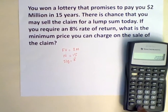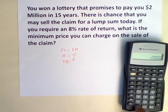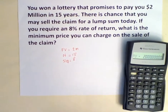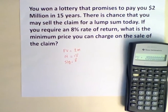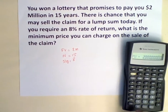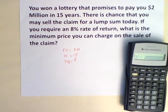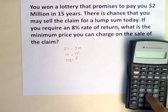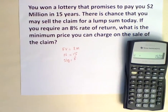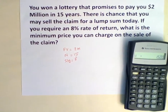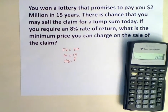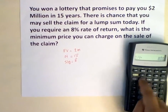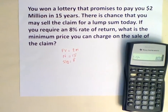$2,000,000 is our future value, so we input 2,000,000 and hit the FV button. We're investing for 15 years, so 15 is our N — hit N. We require an interest rate of 8%, so enter 8 and then hit the I/Y button.